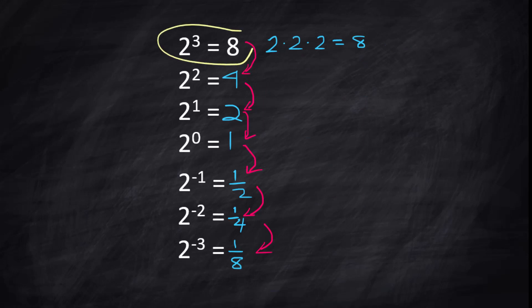You started with 2 to the third power equals 8. And we ended up with 2 to the negative third power equals 1 over 8. Well, 1 eighth is 1 over 2 to the third power.